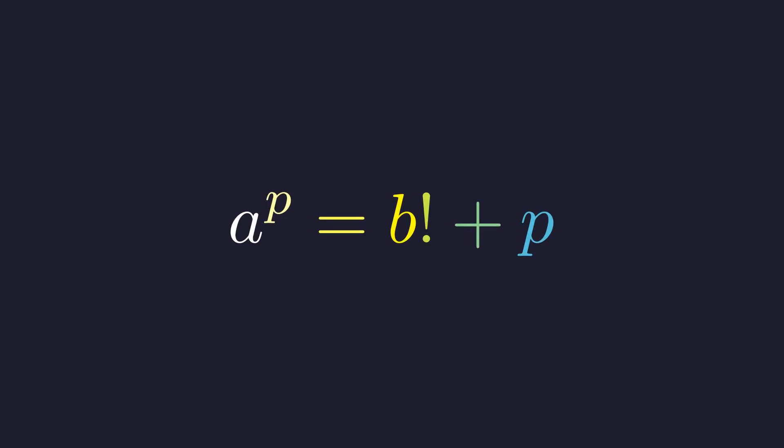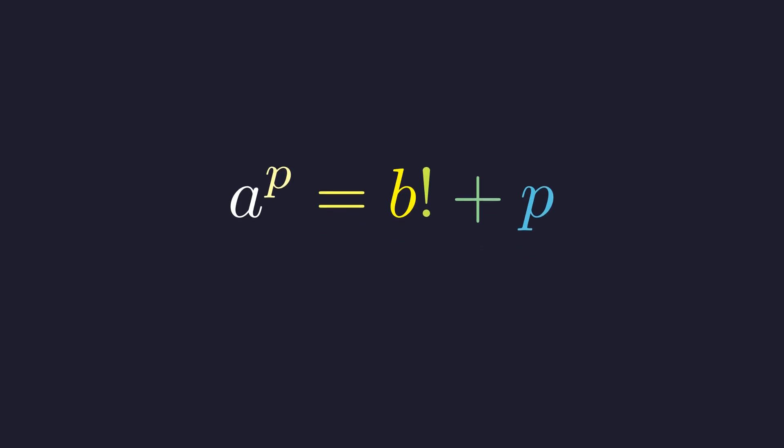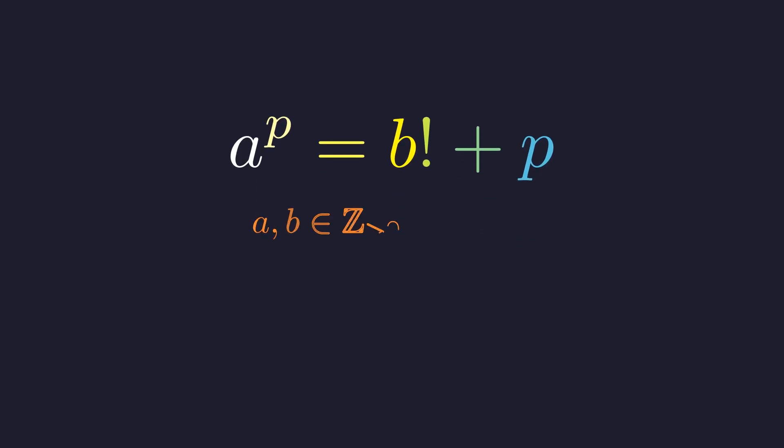Here is a fascinating equation that mixes exponentiation, factorials, and prime numbers. We are looking for positive integer solutions for A and B, where P must be a prime. These conditions are critical: A and B must be positive integers, and P must be a prime number. Our entire strategy will hinge on the properties of P.